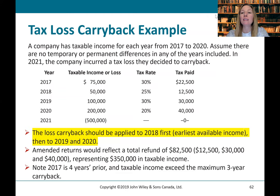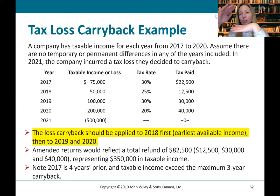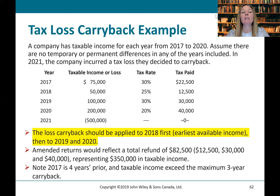Let's look at a tax loss carryback example. A company has taxable income for each year from 2017 to 2020, and we assume there are no temporary or permanent differences in any of the years included. In 2021, the company incurred a tax loss they decided to carry back. That tax loss — and we're talking taxable income, not accounting income — was negative $500,000, so of course there was no tax paid. How do we carry it back? The carryback should be applied to 2018 first, the earliest available income, then to 2019 and 2020.